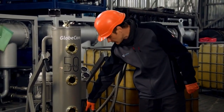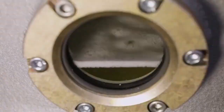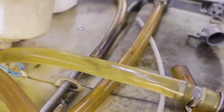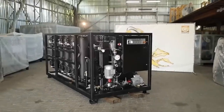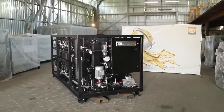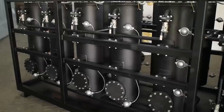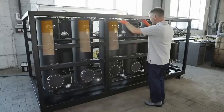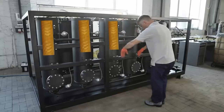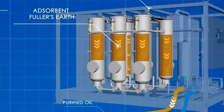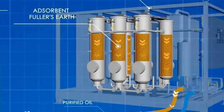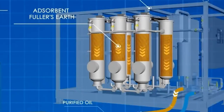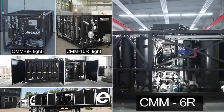At the second stage, the turbine oil is fed into the CMMR machine, where adsorptive purification takes place. Turbine oil is run through columns filled with a sorbent; meanwhile, the sorbent absorbs all decomposition and aging products into its granules.